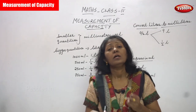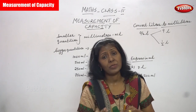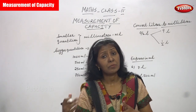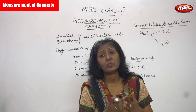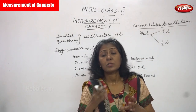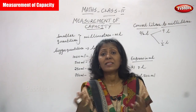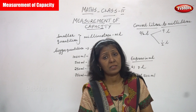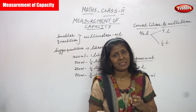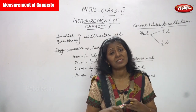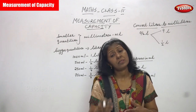So when we measure liquids, we use specific units. The smaller unit is called milliliters — smaller quantities are measured in milliliters. Bigger quantities are measured in liters. This is the basic rule, so don't forget it.